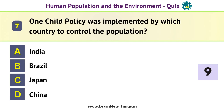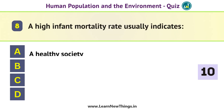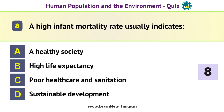One child policy was implemented by which country to control the population? China. A high infant mortality rate usually indicates poor health care and sanitation.